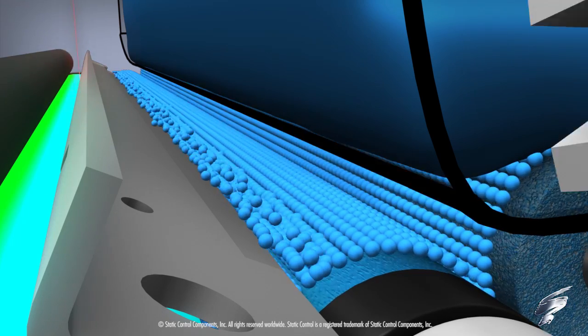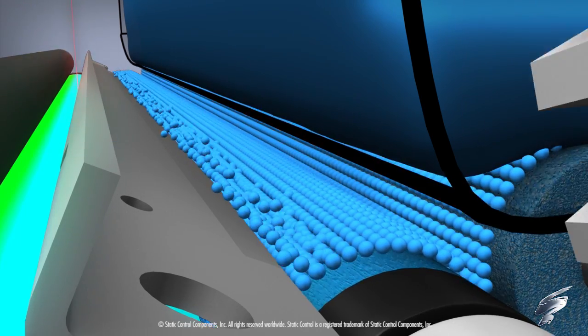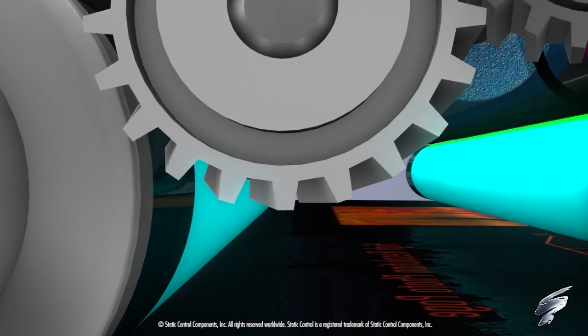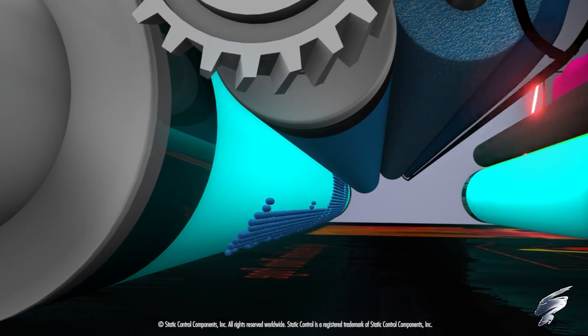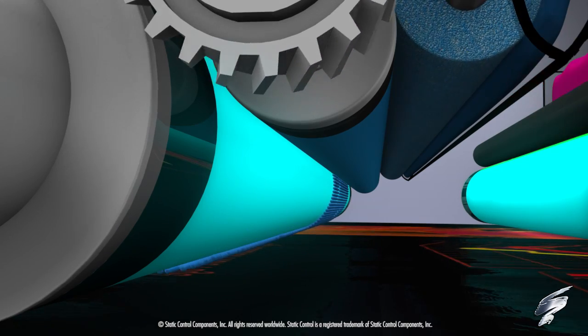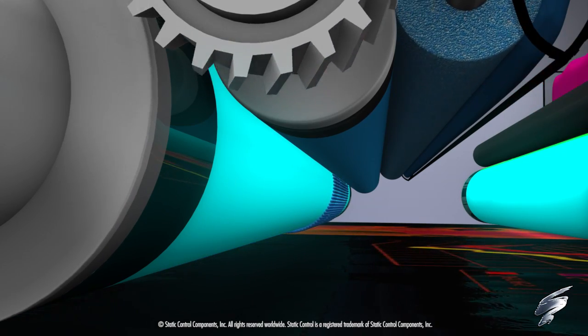As toner moves from component to component, it develops a negative charge, which is attracted to the more positively charged image on the OPC drum. The toner on the OPC drum is then transferred to the intermediate transfer belt.